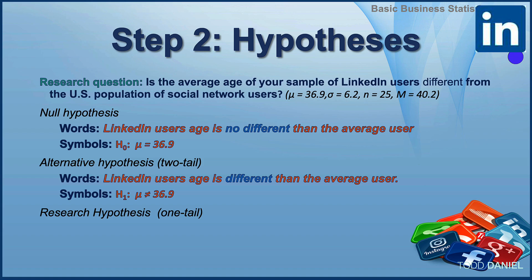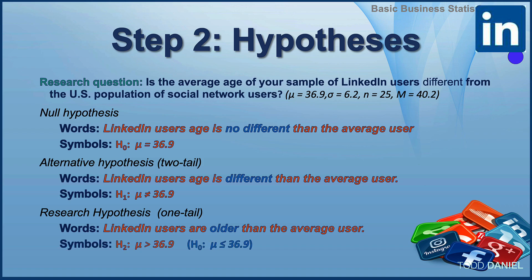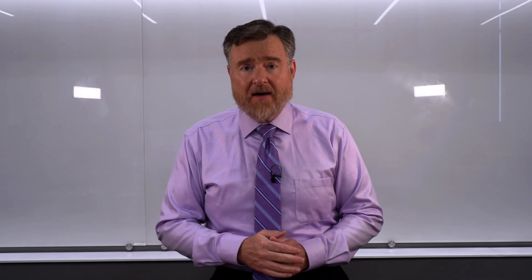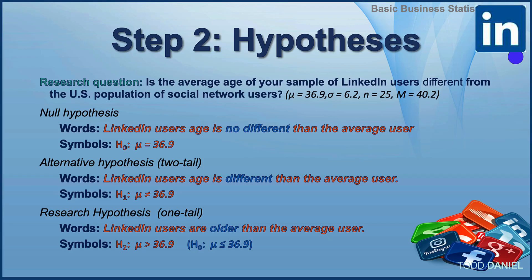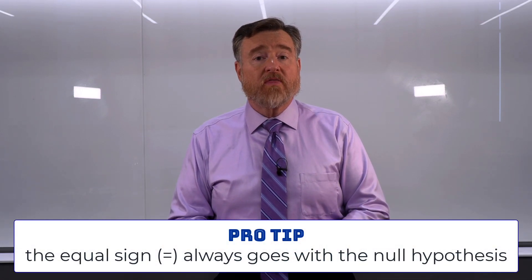If we were using a one-tailed test, we would specify a direction of change. We might write: LinkedIn users are older than the average user, with H₂: μ > 36.9. However, when we specify a one-tailed alternative hypothesis, we need to adjust our null hypothesis. If we're using an alternative that says greater than, the null hypothesis would be H₀: μ ≤ 36.9. Regardless of whether we are doing a one-tailed or two-tailed test, the equal sign will always stay with the null hypothesis.